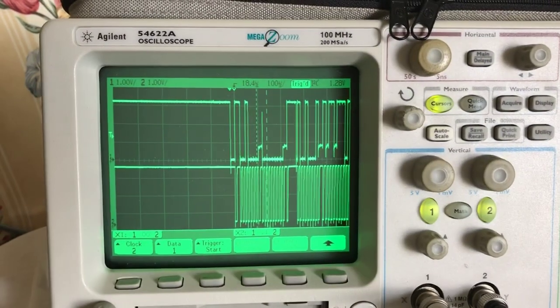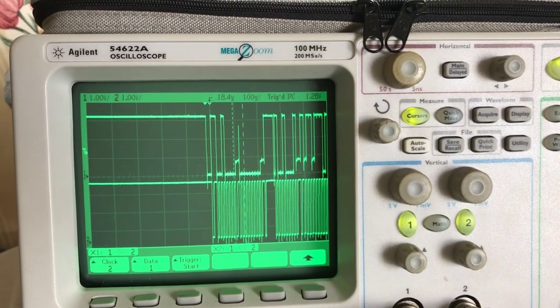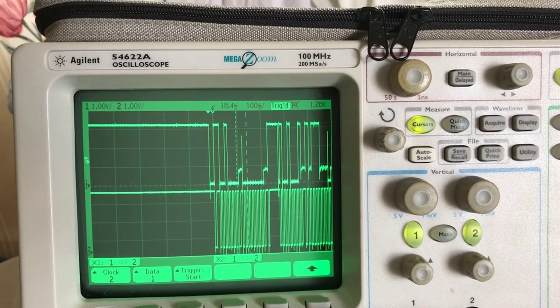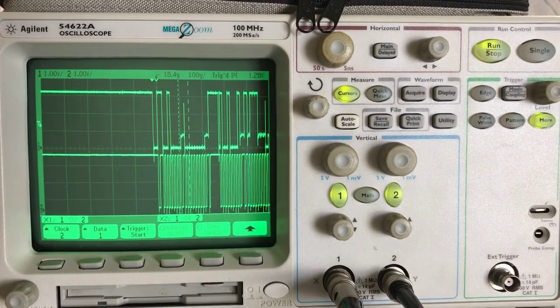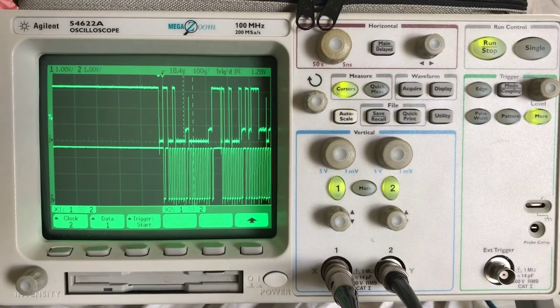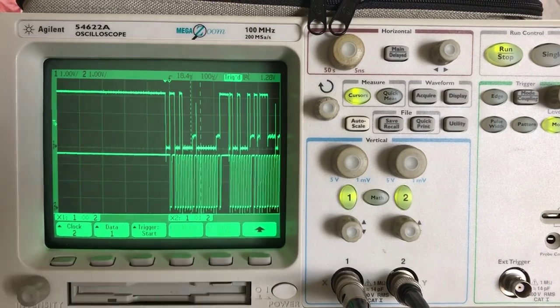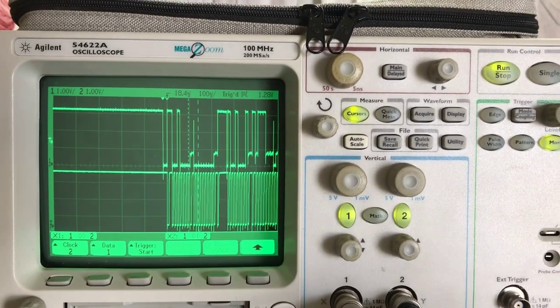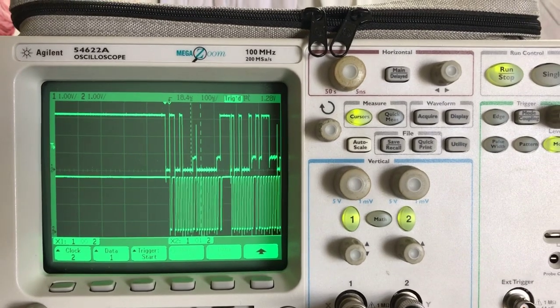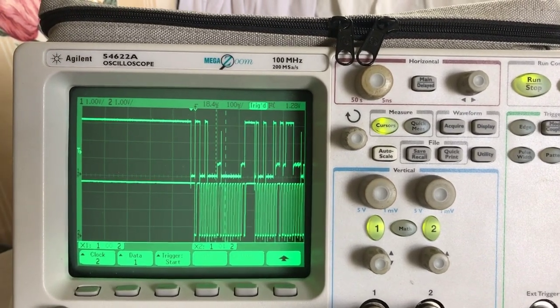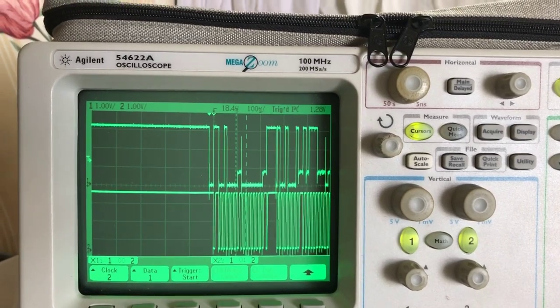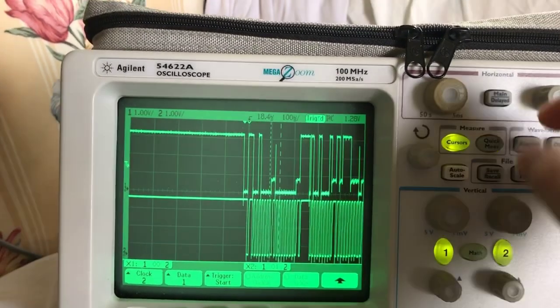This is an Agilent 54622A oscilloscope. It's an old one, but it's actually still pretty good even compared to many modern scopes. It has quite a bit of memory, and it's a simple scope, but it has all the features you need. It will trigger on I2C, which is pretty cool.